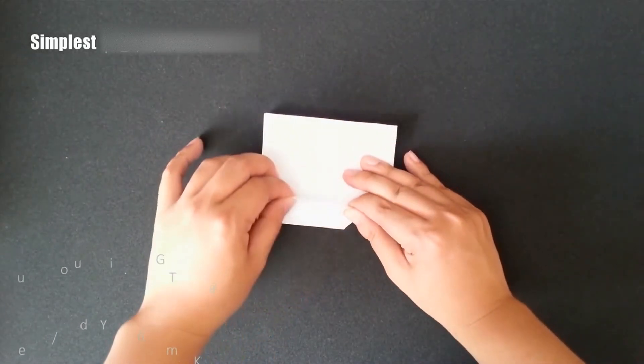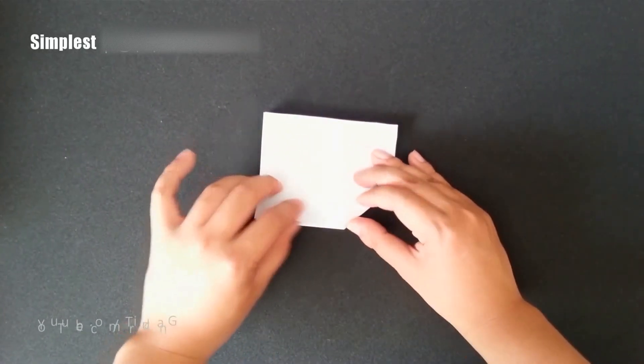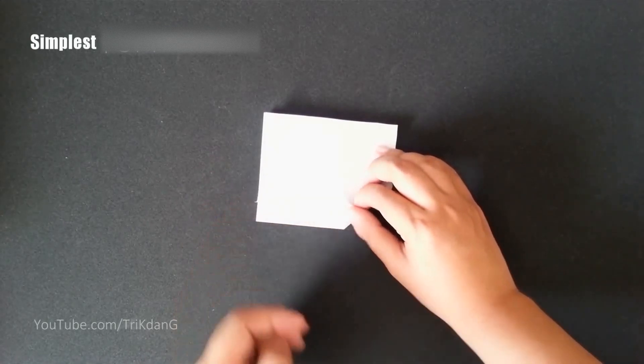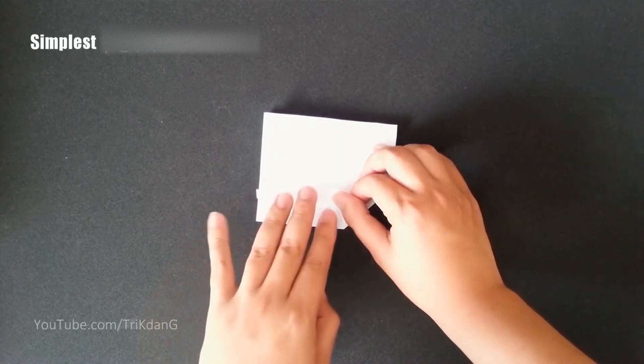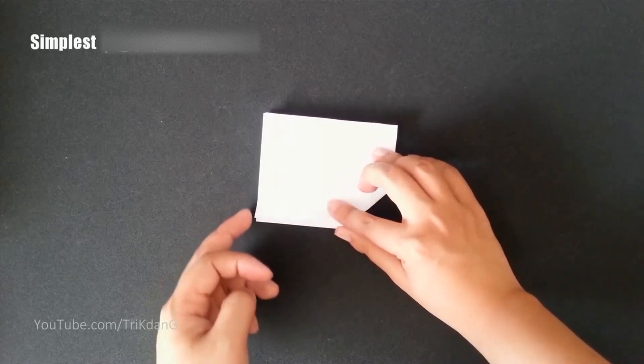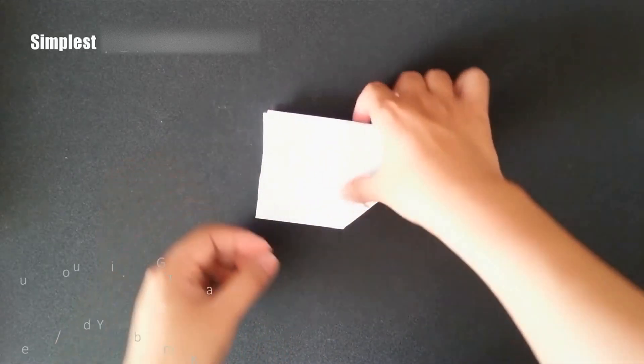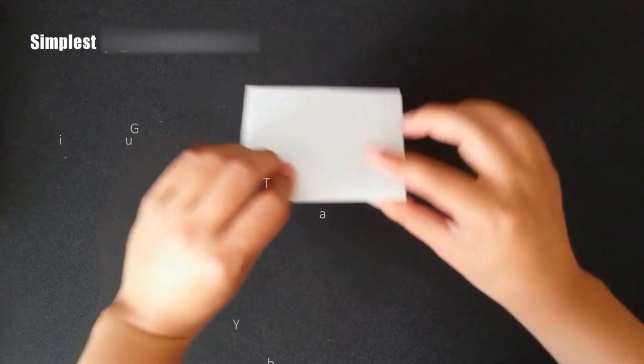Tenth step, create the stabilizers for both sides. Now, let's do this one for this side first. Estimate about half an inch along this edge and just fold these wings up. And repeat the same step for this side.